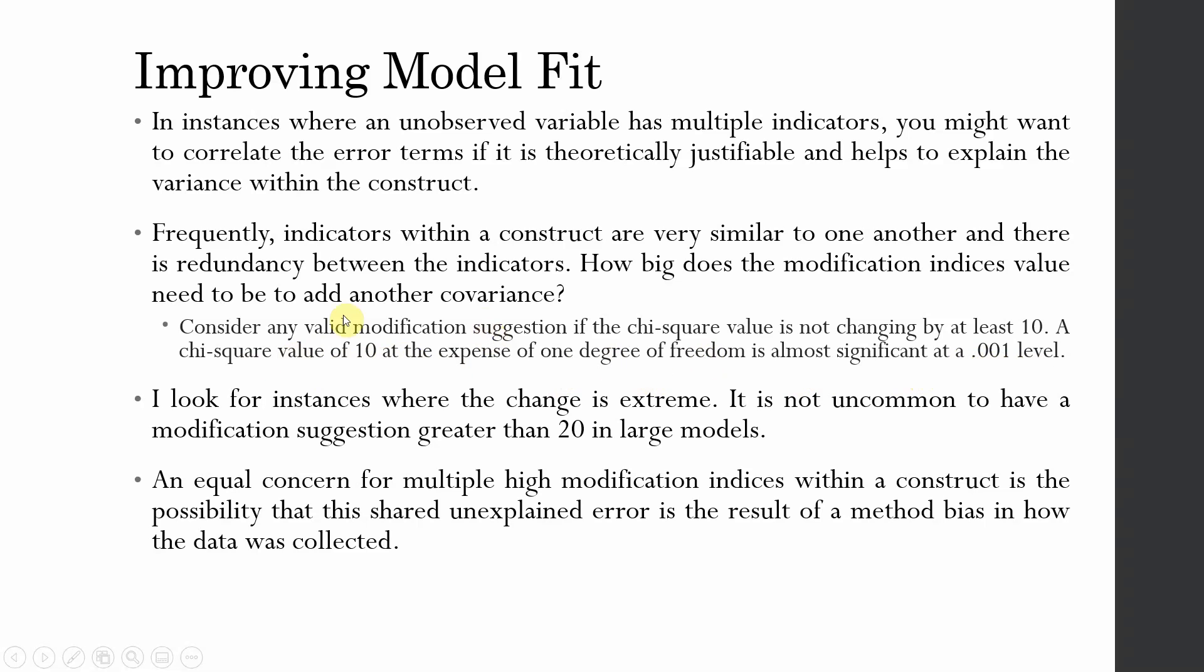This means that drawing the covariance will help you improve your model fit if it is greater than 10. But normally what happens is in AMOS the minimum they have kept is 4. What I do normally is I look for instances where the change is extreme. It's not uncommon to have a modification suggestion greater than 20 in large models.